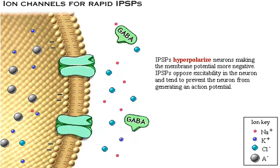Inhibitory post-synaptic potentials hyperpolarize neurons, making the membrane potential more negative. Inhibitory post-synaptic potentials oppose excitability in the neuron and tend to prevent the neuron from generating an action potential.